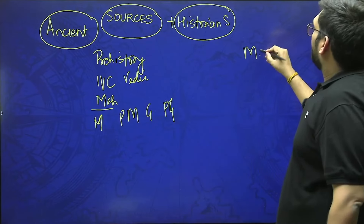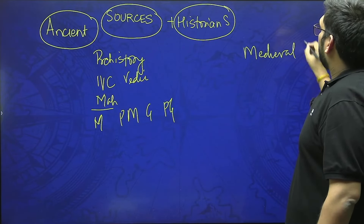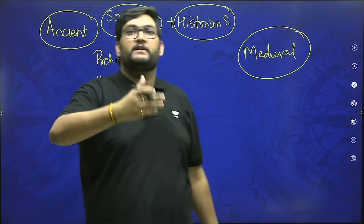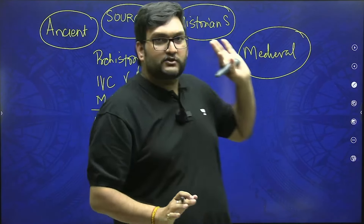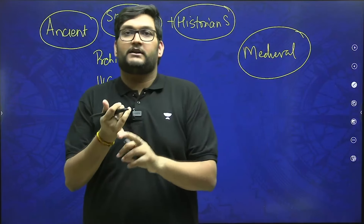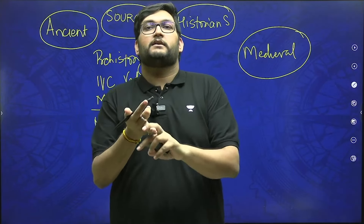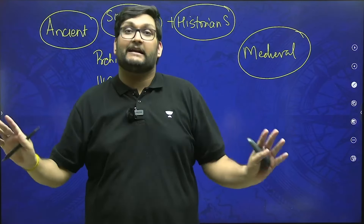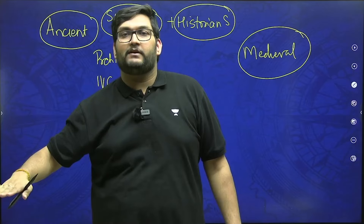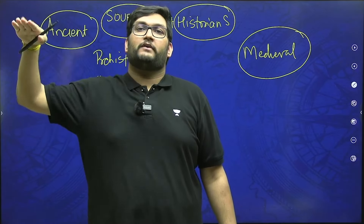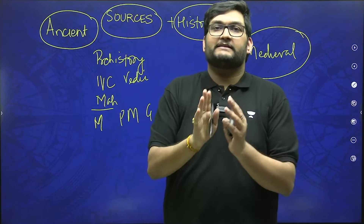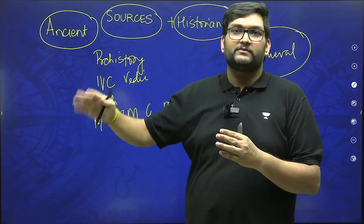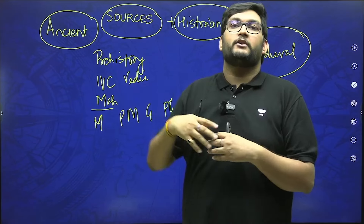Same is true for medieval. When you do medieval, the whole syllabus is divided into centuries — 13th, 14th, 15th, 16th. Except for sources and historians, whether it is the Turkish invasion, Delhi Sultanate, Vijayanagara-Bahmani, Mughal India — everything is the same as what you cover for prelims, just at a lower factual level. For Paper 1, covering ancient and medieval, the only difference is that for prelims you need a factual and conceptual understanding, whereas here you need a descriptive understanding.